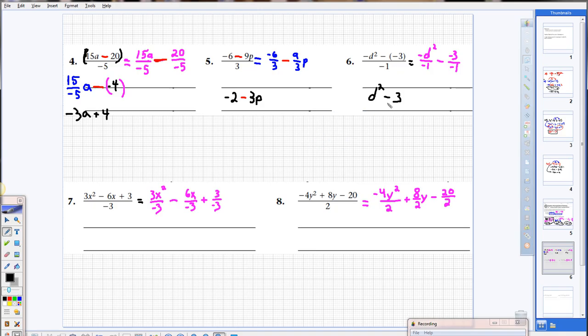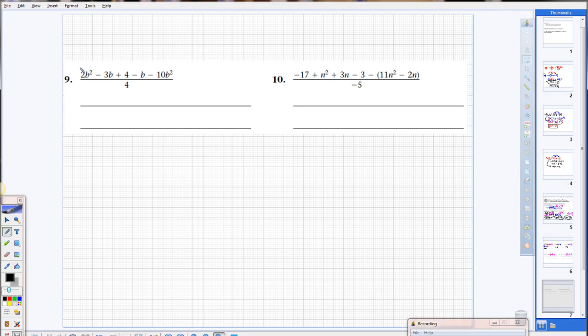All right. Feel free to pause and review any of these. Anyways, I've set the work up for you. In the critical thinking problems, you definitely want to combine like terms first. So see if there's any like terms that you can combine here. Oh, like I see a 2b squared and a minus 10b squared.